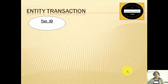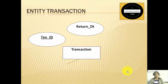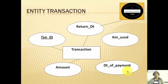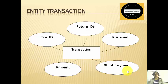Next we talk about the entity transaction, which is identified by transaction ID, return date, kilometers used, date of payment, and so on. This transaction entity refers to the payments done when the car is returned, so it contains all the attributes related to payment. In case you want to pay by card or by cash, those card details can also be stored here, but it is not mentioned in the case study so we have not included it.